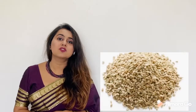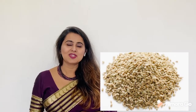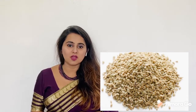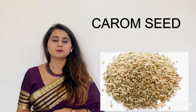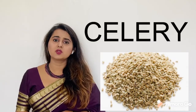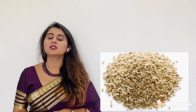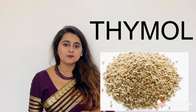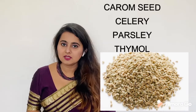The next word is AJWAIN. Many moms feed children ajwain mixed with salt. What do we call AJWAIN in English? AJWAIN is called CAROM SEEDS — C-A-R-O-M S-E-E-D-S. We also call AJWAIN CELERY — C-E-L-E-R-Y. One more word: PARSLEY — P-A-R-S-L-E-Y. And last but not least, THYMOL — T-H-Y-M-O-L. So four English words for AJWAIN are: carom seeds, celery, parsley, and thymol.